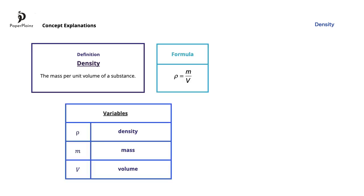In physics, density is defined as the mass per unit volume of a substance. We can express this definition using the following formula where the Greek letter rho represents density and where m is mass and v is volume.